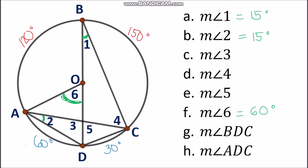We can use arc AB to find the measurement of angle 4. Angle 4 is an inscribed angle and its intercepted arc is arc AB. Using the inscribed angle theorem, the measurement of angle 4 is half of 120 degrees, which is 60 degrees.